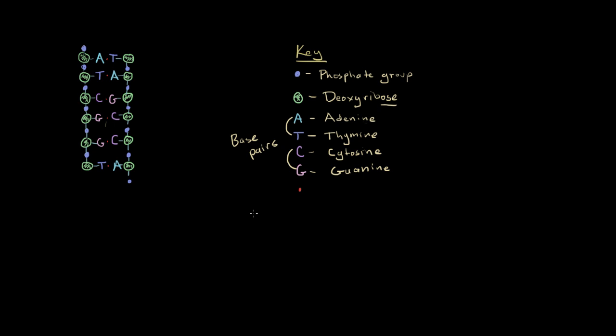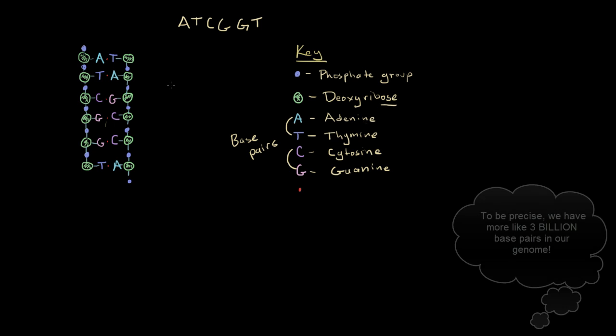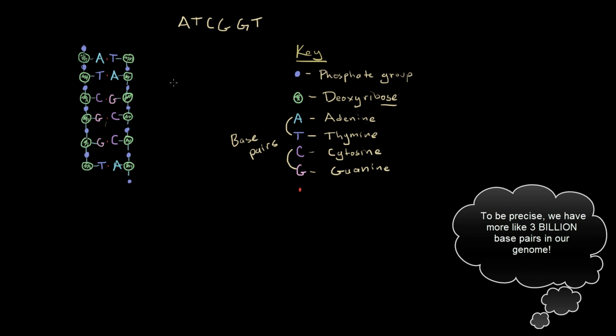Now let's talk about how we would actually read DNA. Only one side of DNA is read at a time. So to read this DNA it would be, and I'll write it down: A, T, C, G, G, T. There are six bases in this small fragment of DNA. In your entire genome there are hundreds of thousands of bases spelling all sorts of information.